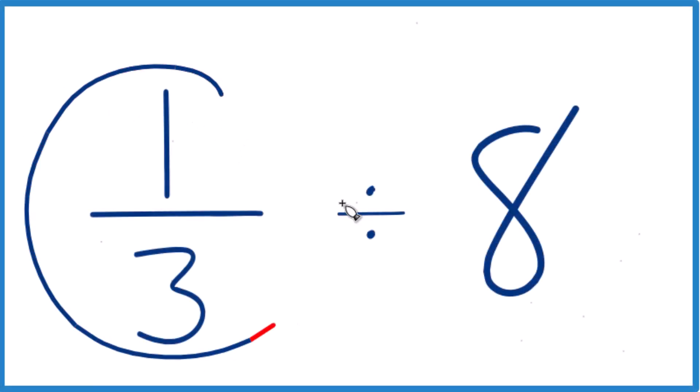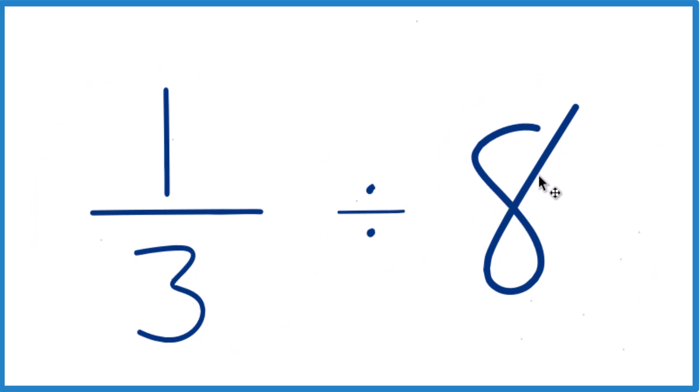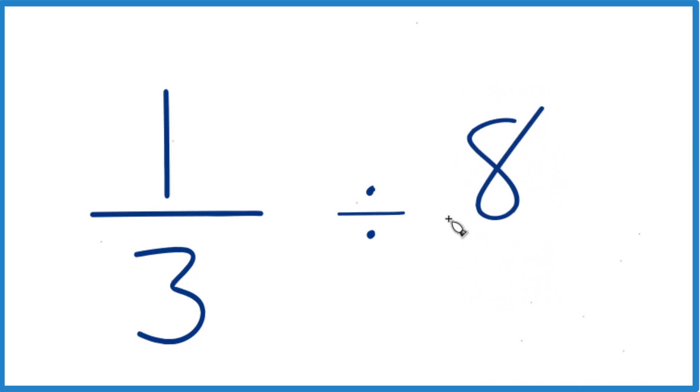If you're asked to figure out one-third divided by eight, here's how you do it. First off, let's take eight and instead of eight, let's call it eight over one. Eight divided by one is still eight, but this looks a little bit neater. We have these lining up here.